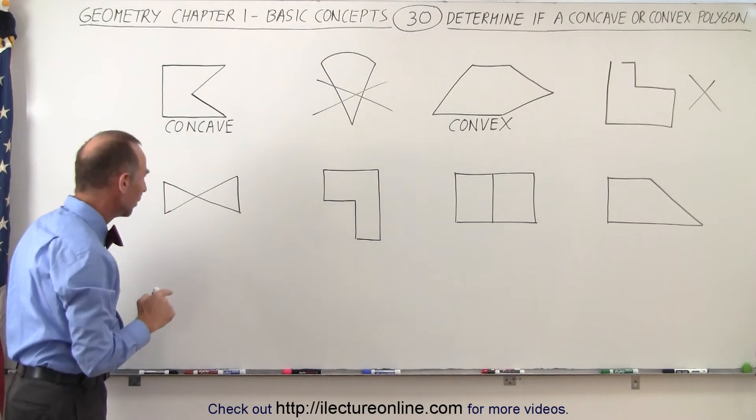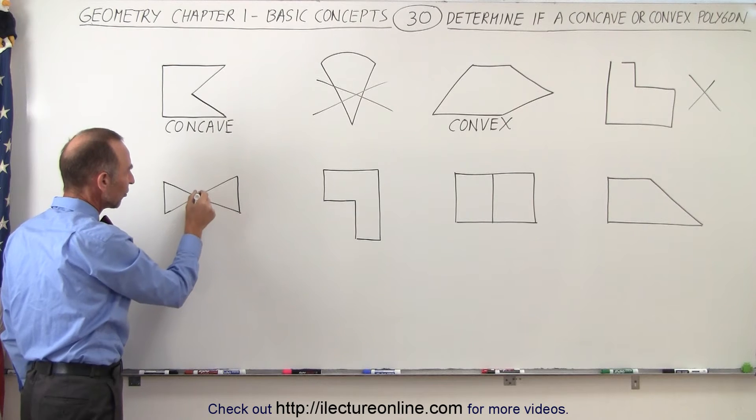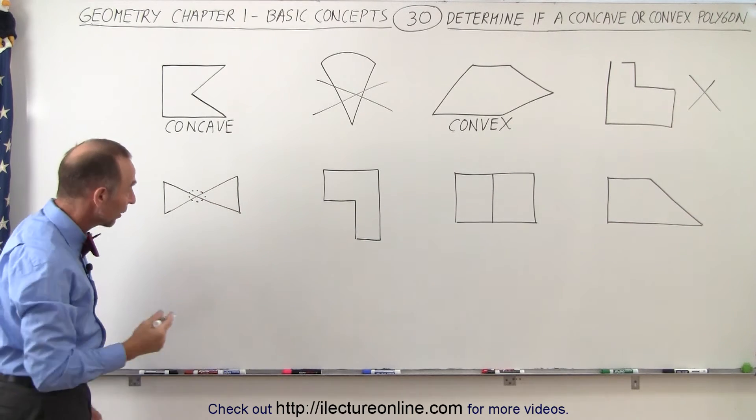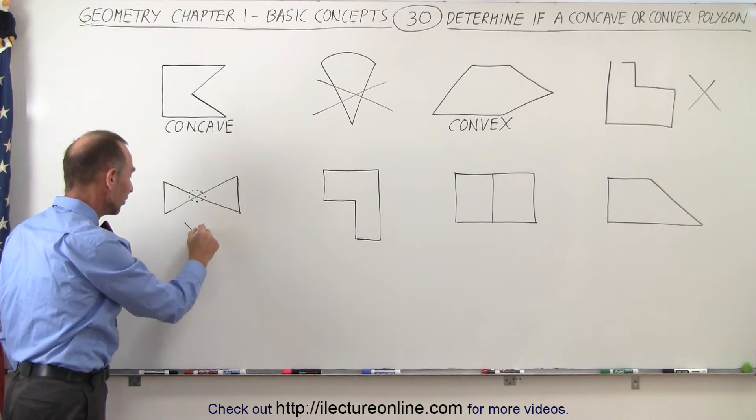Coming up here, we can see that this line segment intersects with more than one other line segment, so therefore we can say that this is not a polygon.